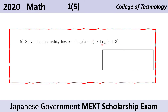The domain of the logarithmic function is the set of values greater than zero. That is, we cannot have negative values or zero. So this quantity here, this quantity here, and this quantity here must all be greater than zero.